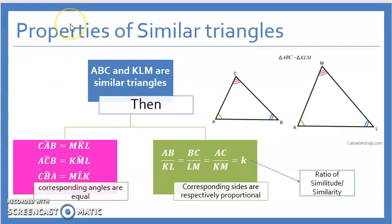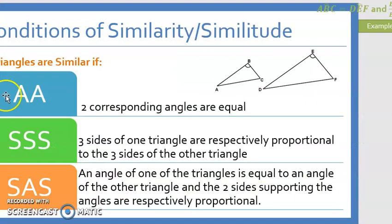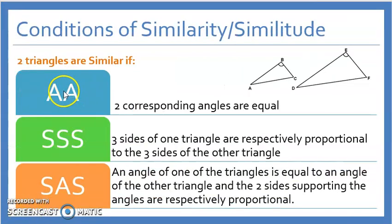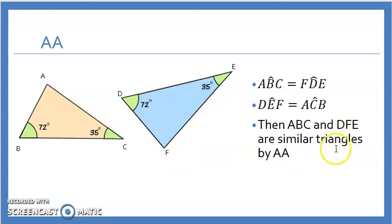Quick recap: if two triangles are similar, all angles are equal and corresponding sides are proportional with ratio K. Now, what if you're asked to prove similar triangles? You have three methods. The first is the angle-angle method: you need to prove that two corresponding angles are equal. For example, if ABC equals FDE equals 72° and ACB equals DEF equals 35°, then the two triangles are similar by angle-angle.